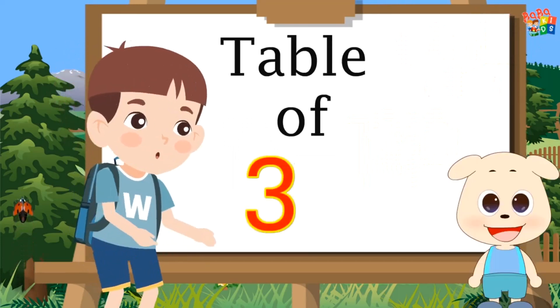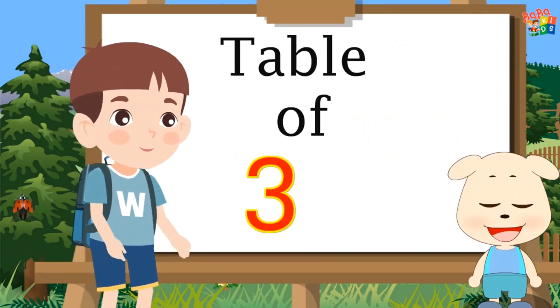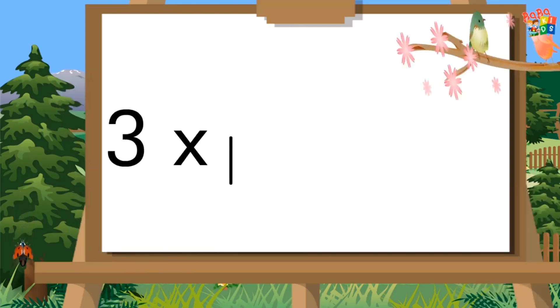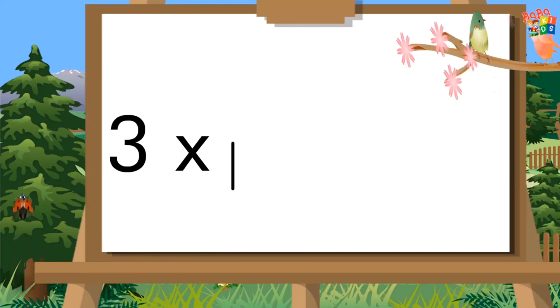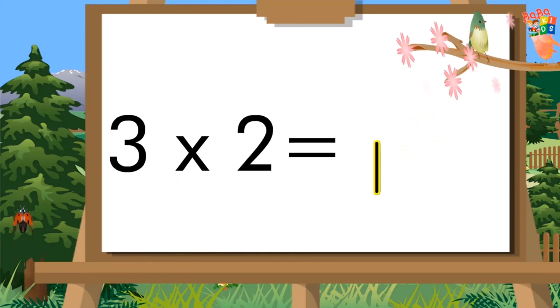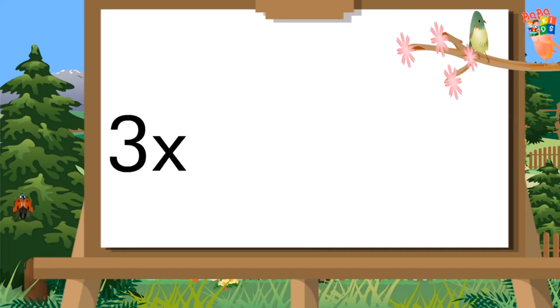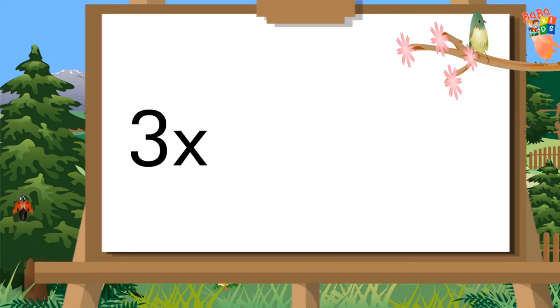Table of Three. Three, one's a three. Three, two's a six. Three, three's a nine. Three, four's a twelve.